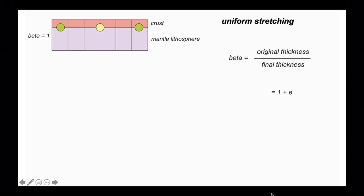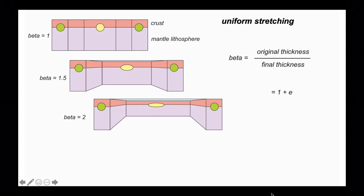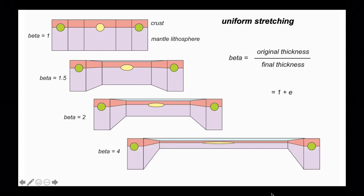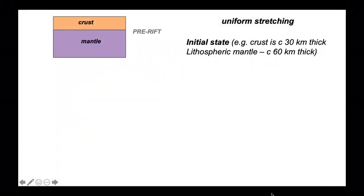Let's see what happens. Here we've stretched by a factor of 1.5, here by a factor of 2, so the crust and mantle lithosphere are now half their original thickness. At beta of 4, the crust and mantle lithosphere are quarter of their original thickness. That's uniform stretching.